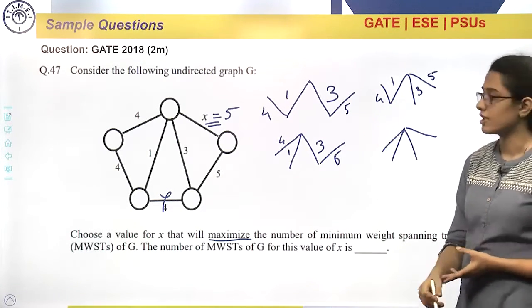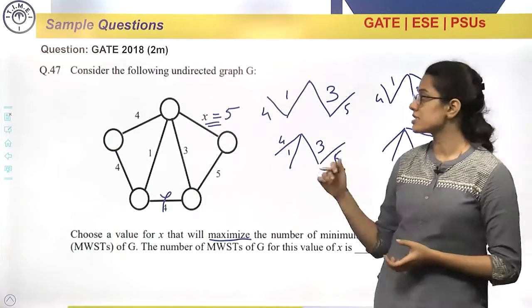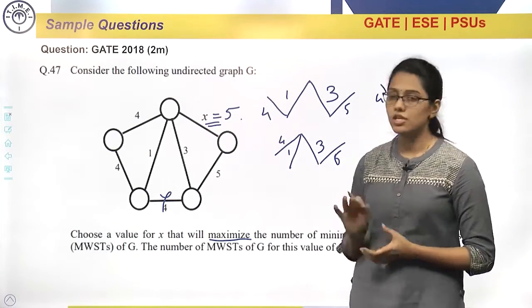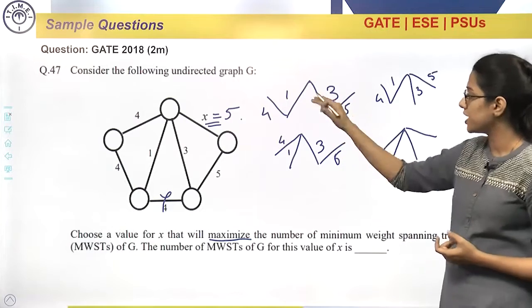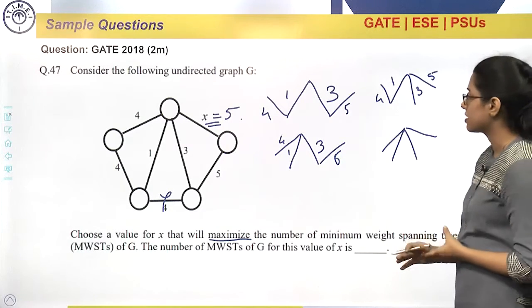If we consider 6 here, every time this edge will get preferred, and we will be getting only 2 minimum cost spanning tree structures. But we want to maximize.